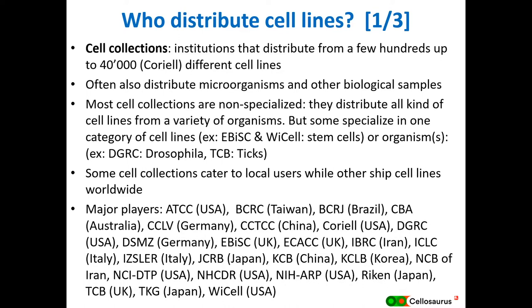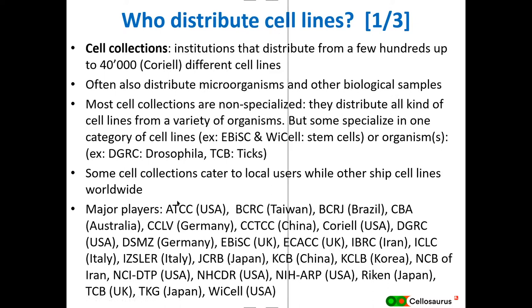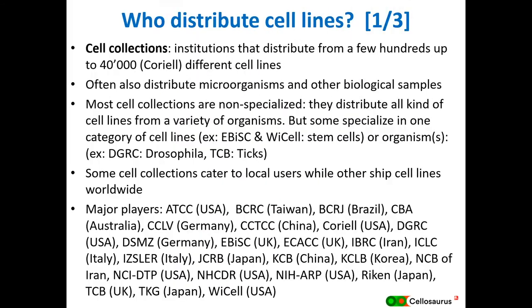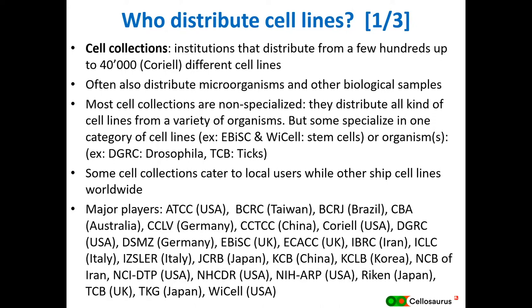There are about 40 major entities from countries like the USA, Germany, Italy, and Japan that distribute cell lines. The most well-known is ATCC — the American Type Cell Collection — which distributes not only cell lines but also microorganisms. But they're not the only one. Most of these cell collections are non-profit organizations that became very large but were basically set up as non-profit entities to distribute cell lines worldwide.